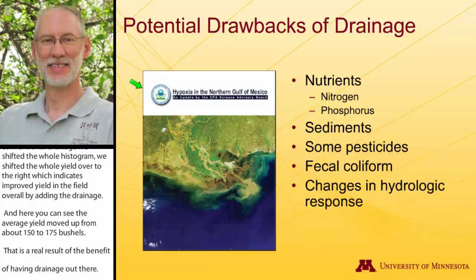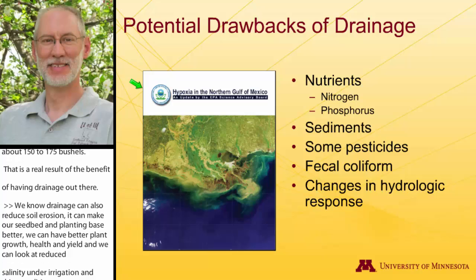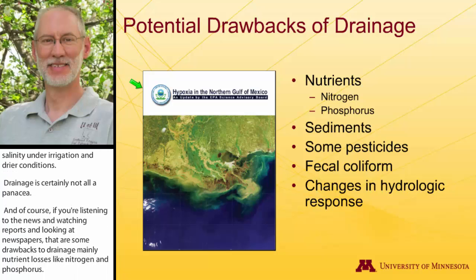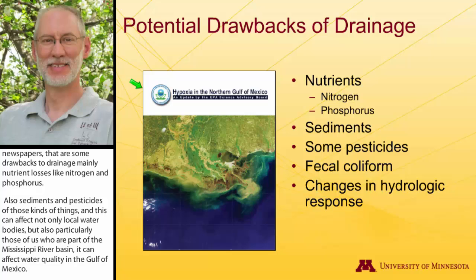Drainage is certainly not all a panacea. There are some drawbacks of drainage, mainly nutrient losses from drainage systems — nitrogen, phosphorus. We can also see some sediments and pesticides. This can affect not only local water bodies, but those of us that are part of the Mississippi River Basin can affect water quality in the Gulf of Mexico. So we have benefits of drainage, but we also have to be cognizant of those drawbacks and how we can try to manage for both agronomic and environmental goals.